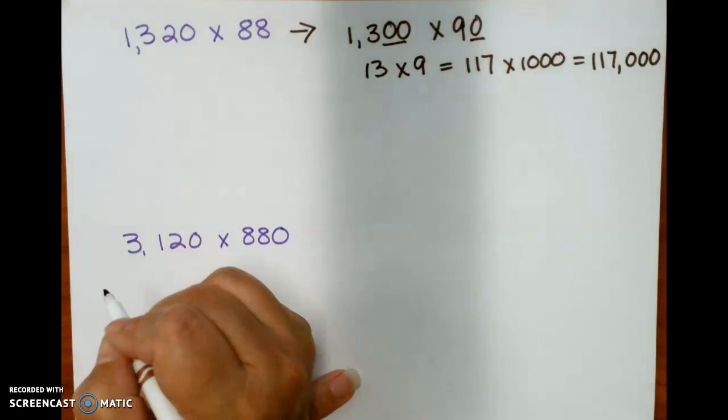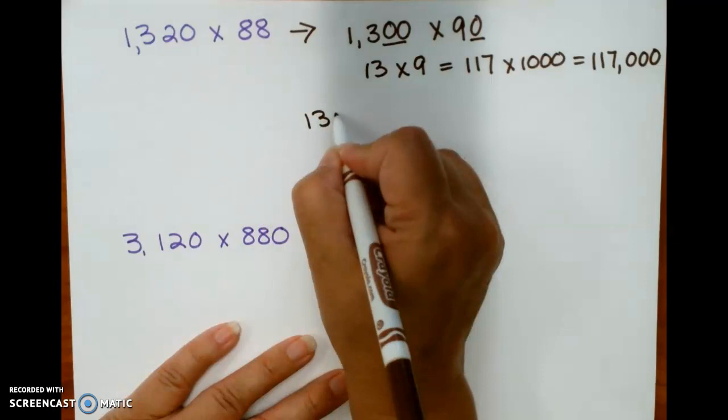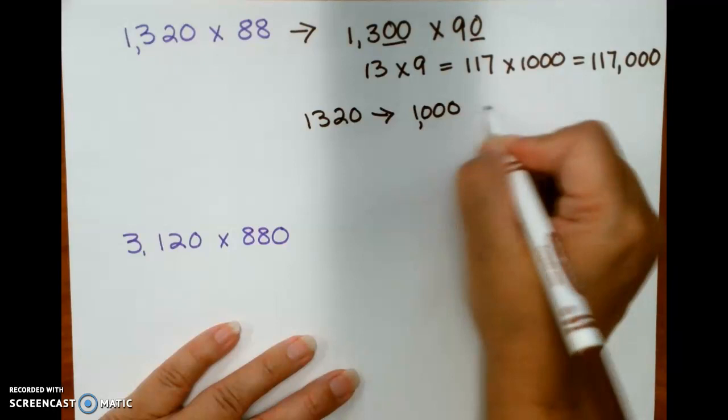So I could also round 1,320 to 1,000 and then multiply that times 90, and that would give me 90,000.